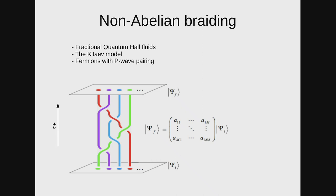Another example of a possible application of adiabaticity or adiabatic protocols is non-abelian braiding for the purposes of quantum computation. These are ideas which were originally developed in the late 1980s and early 1990s, but they became popular in the beginning of this century due to Kitaev's works.